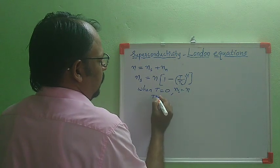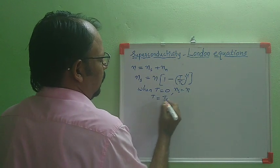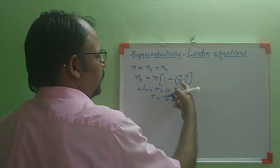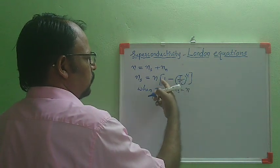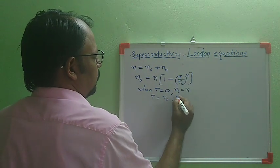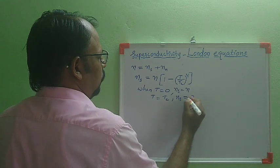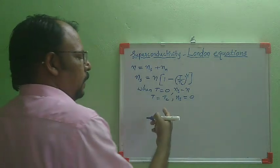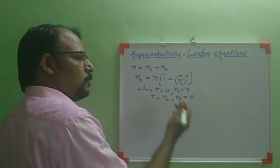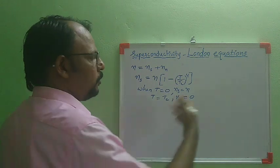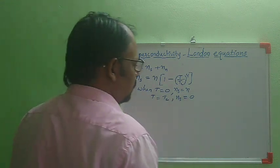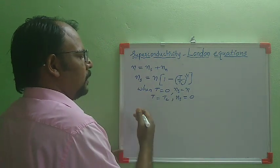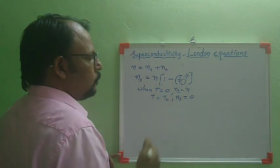When temperature becomes the transition temperature, T = Tc, this term becomes 1, so Ns = 0. All the electrons transform into normal electrons at the transition temperature, and superconductivity vanishes. Above the transition temperature, the material behaves like a normal material, and below it, the material is a superconductor.